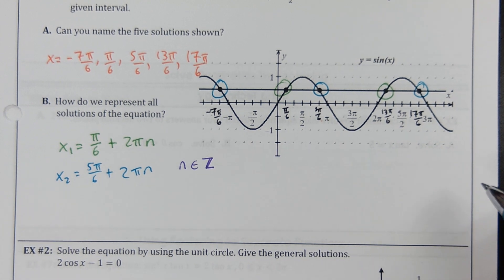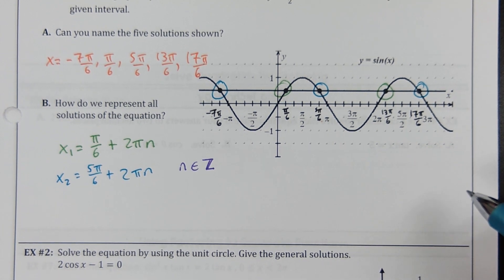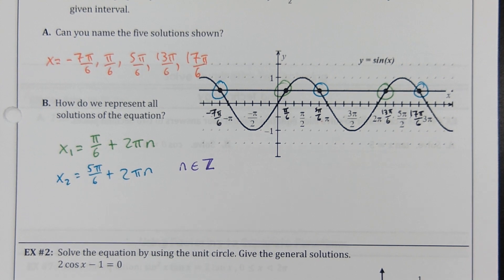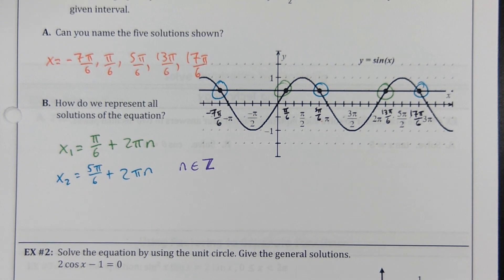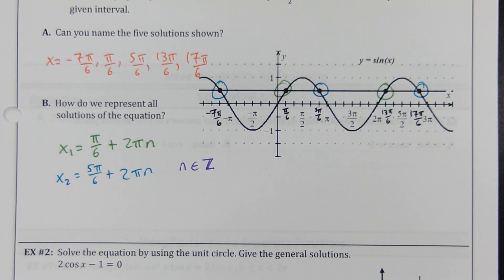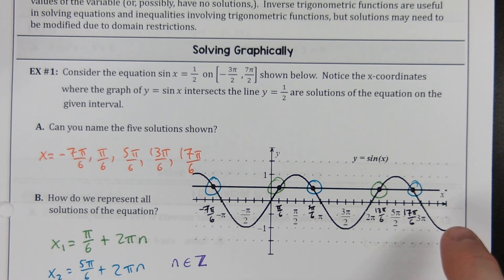That's what we'd do with a picture — but what if we didn't have a graph? Most of the time you won't be able to use a graph or calculator to solve trig equations. Luckily, one half is the ratio of two side lengths of a special right triangle that we know, so let's talk about how to work this out.